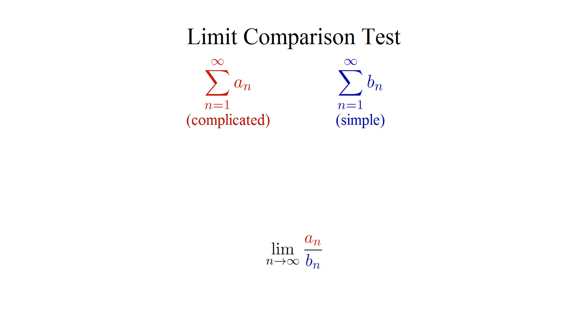As long as we get something, anything, that is greater than zero but less than infinity, that is something strictly positive but finite, the limit comparison test tells us that the two original series have to share the same convergence status, either both converge or both diverge.